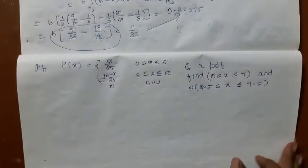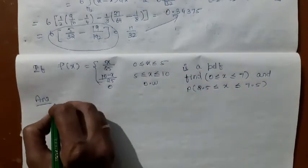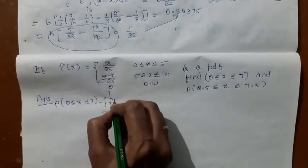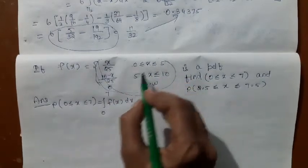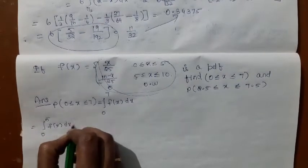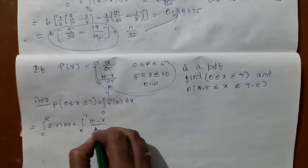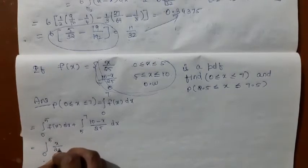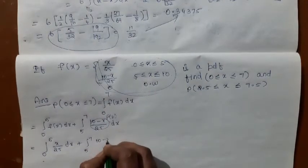Let us consider another problem. This probability density function is given as a piecewise function: f(x) = x/25 for 0 to 5, and f(x) = (10 − x)/25 for 5 to 10. Find the probability that x lies between 0 and 7. Integrating from 0 to 7 requires splitting at 5: integral from 0 to 5 of x/25 dx plus integral from 5 to 7 of (10 − x)/25 dx.